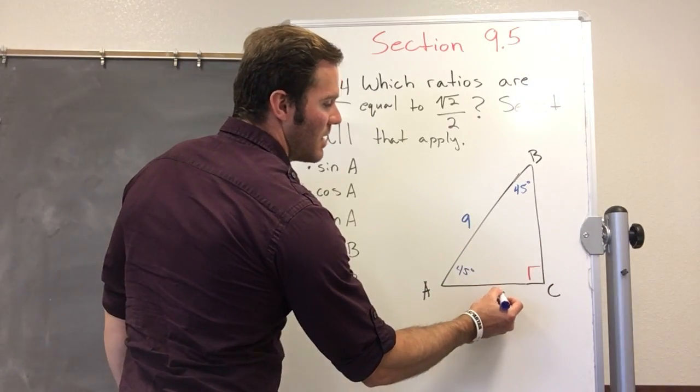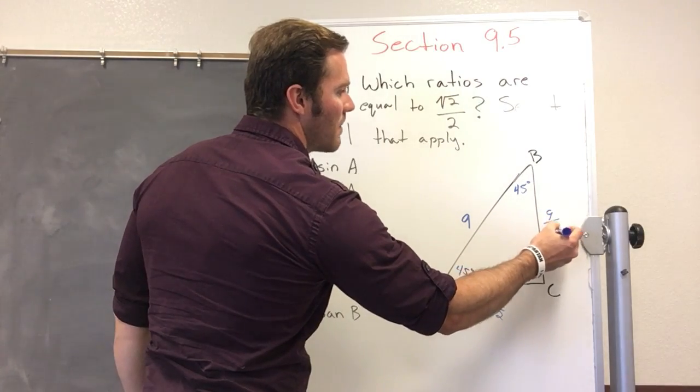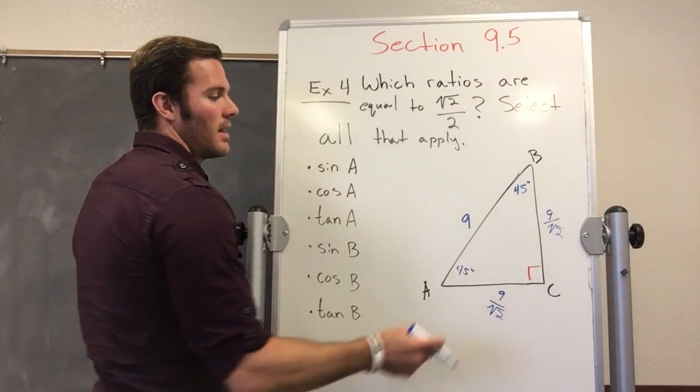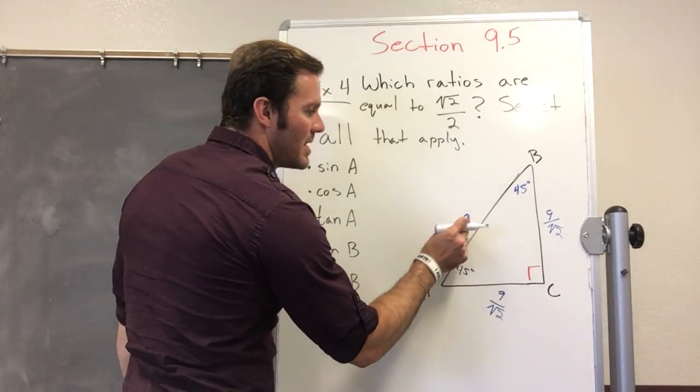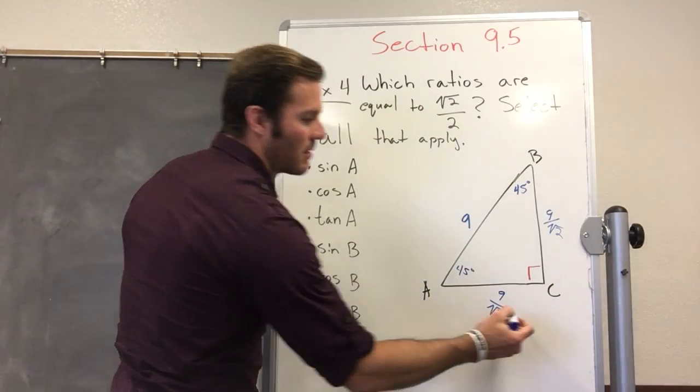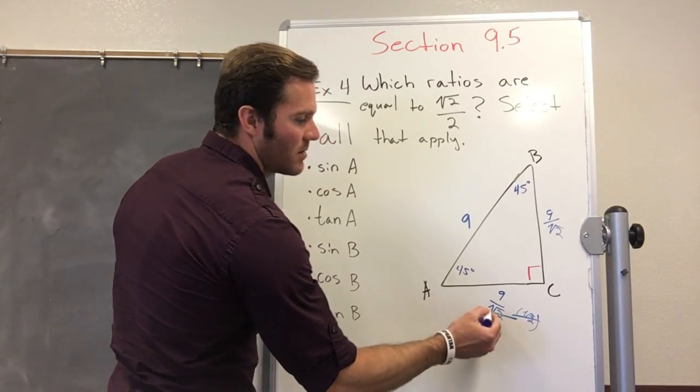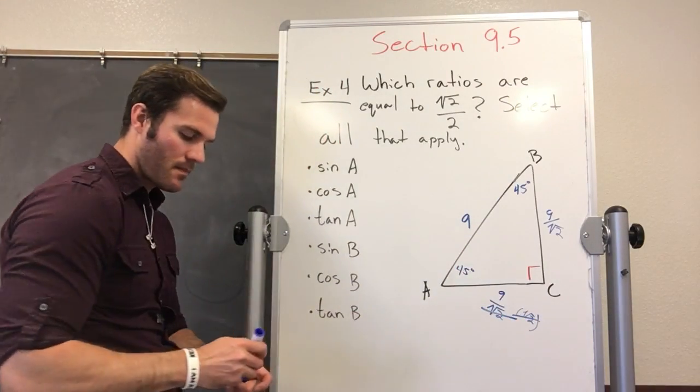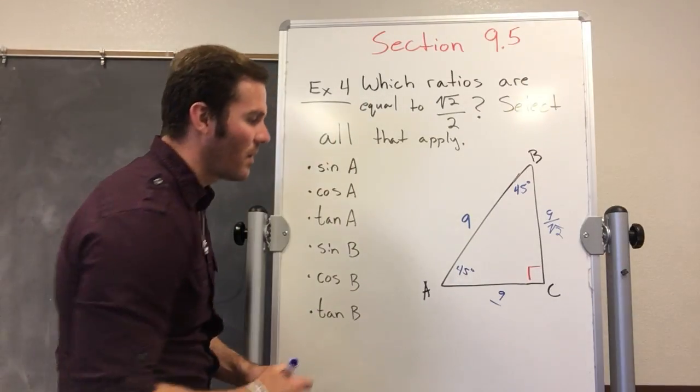Which is 9 over the square root of 2. How did I get that? Well, if this times the square root of 2 equals 9, they cancel out, right? So they equal 9. So 9 over the square root of 2 is the length of the sides.